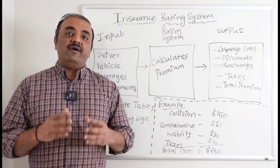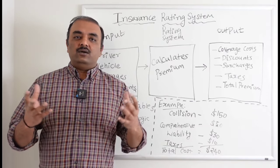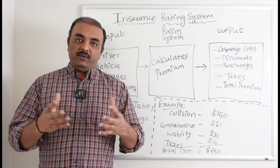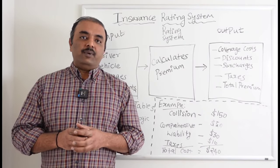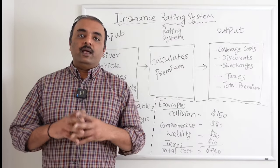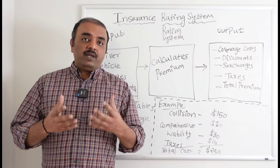In the rate tables they have a factor. Factors are nothing but a kind of numerical value that will be used to derive the premium. So the factor will be multiplied by the individual attributes of the policy and then they will come up with the premium.